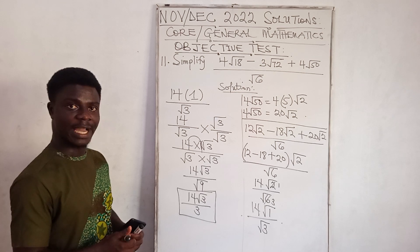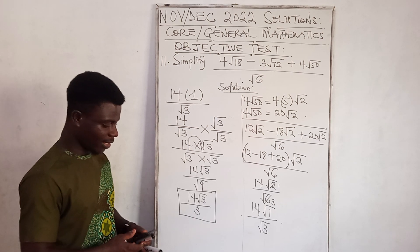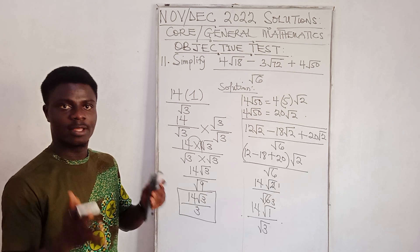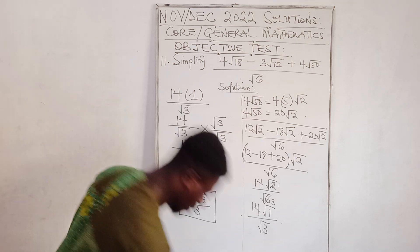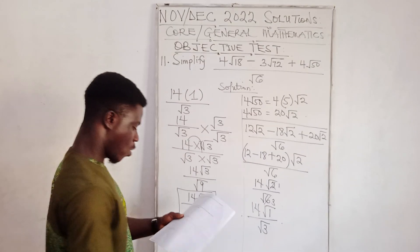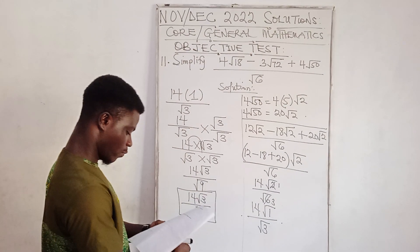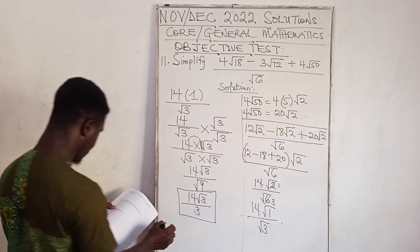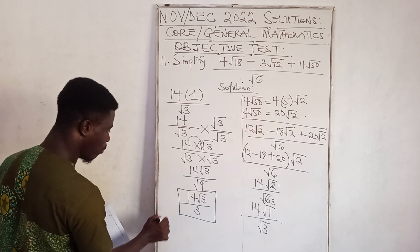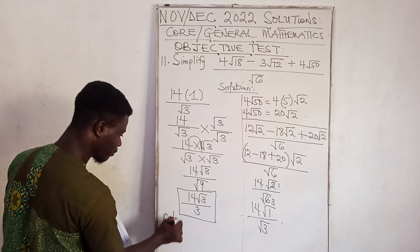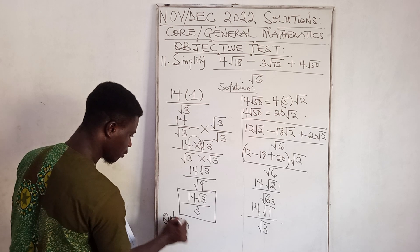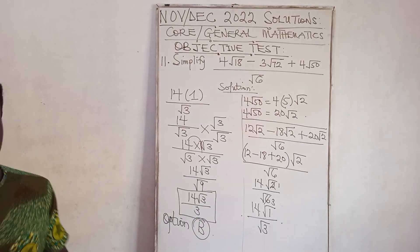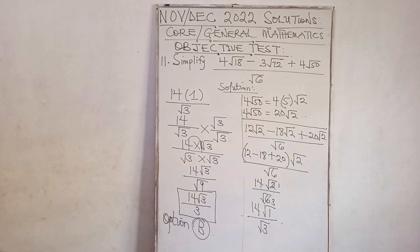So our answer in simplest form is 14√3 divided by 3. We cannot simplify further. The answer to question 11 is Option B.